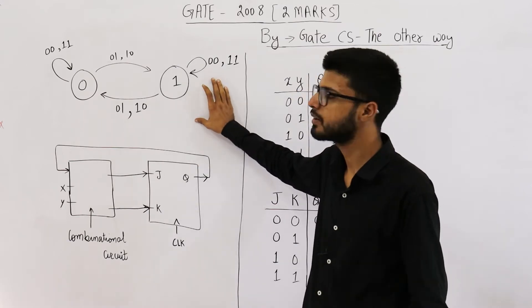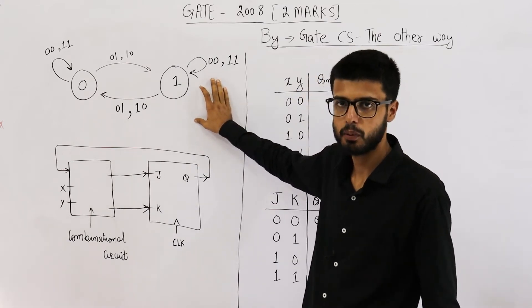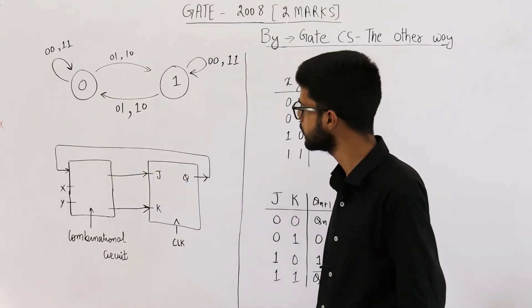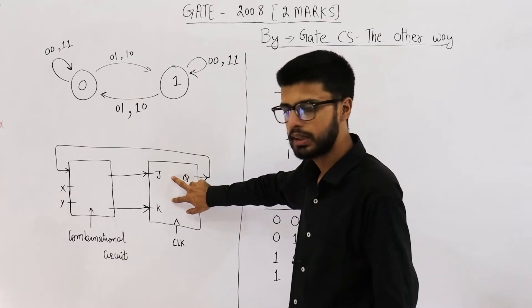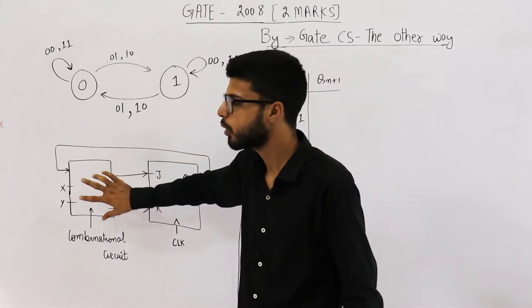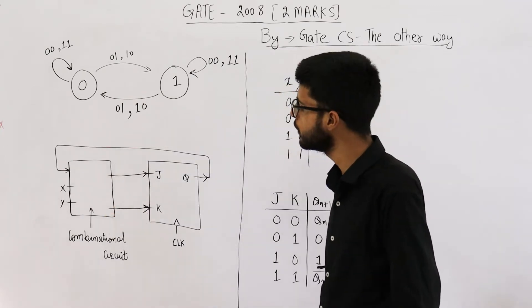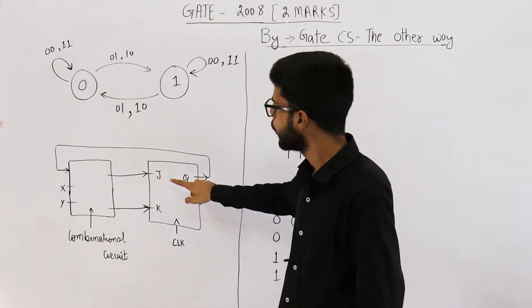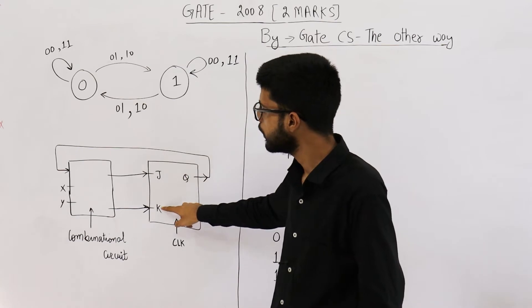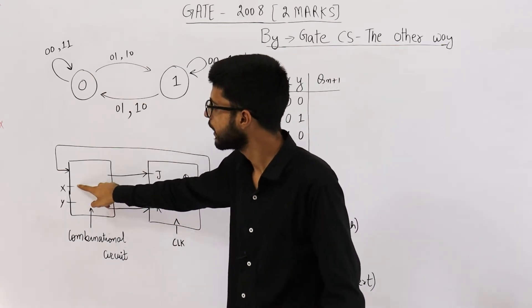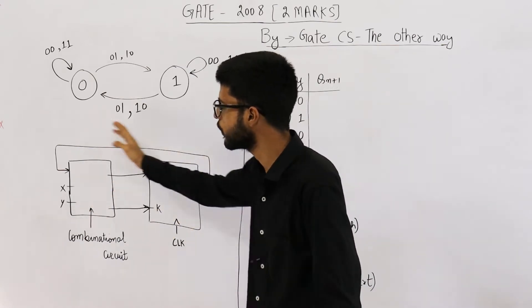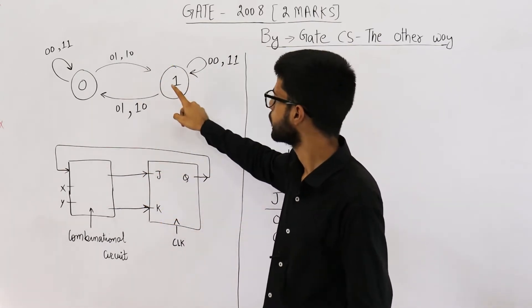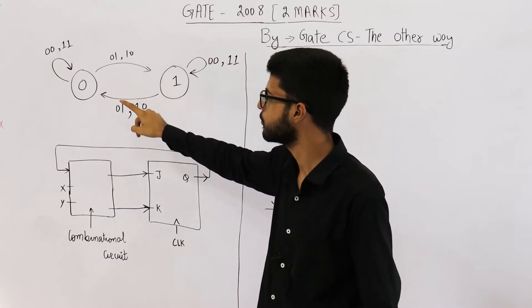They have given you this state transition diagram of some flip-flop. Also, they are trying to implement that specific flip-flop. You can see they have used one JK flip-flop and some combinational circuit. Okay, the flip-flop whose state transition diagram is given.